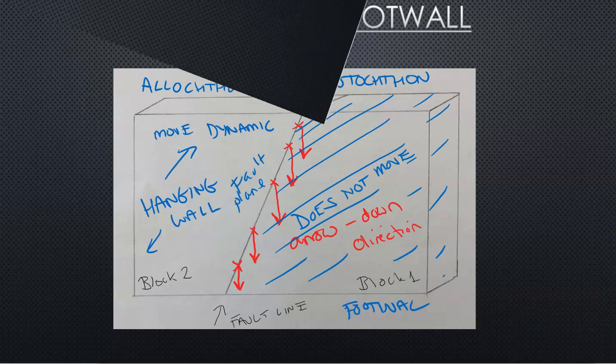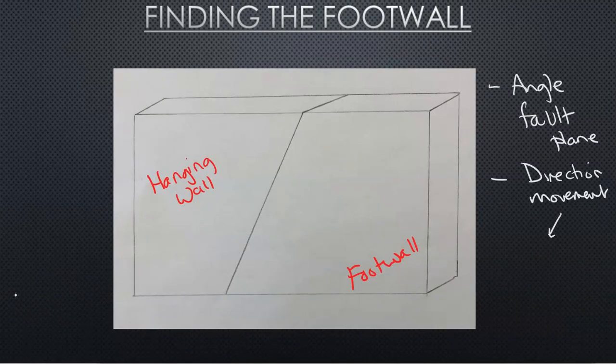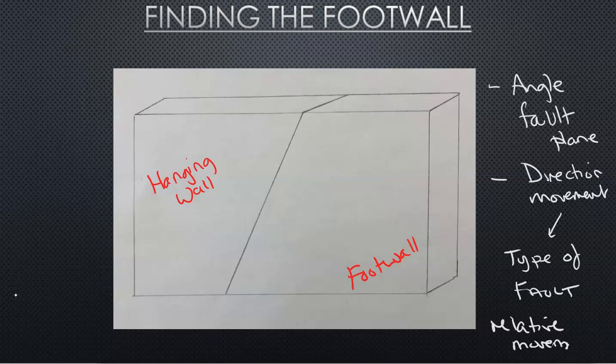Now what do we do with this? We could figure out the angle of the fault plane. We could also figure out the direction of movement of the hanging wall. And that would denote or assign a type of fault to the relative movement of that hanging wall.